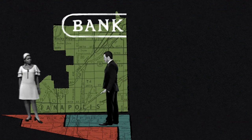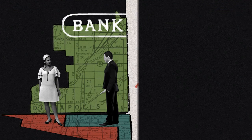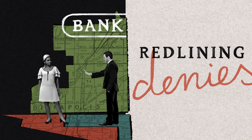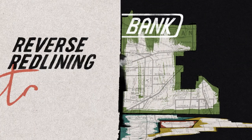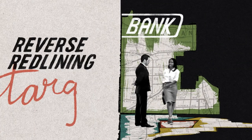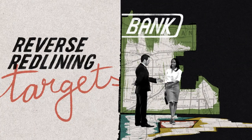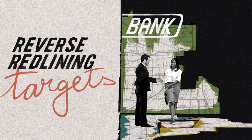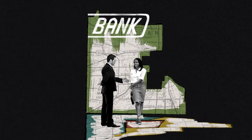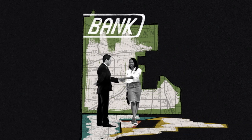Where redlining sought to preserve white communities by denying loans and mortgages to those viewed as non-white, reverse redlining involves targeting residents within certain geographic boundaries, often based on income, race, or ethnicity, and giving those targeted borrowers credit on unfair terms — different from what other similarly qualified people could get. Often these are predatory products, built to fail or loaded with significantly higher costs and fees.